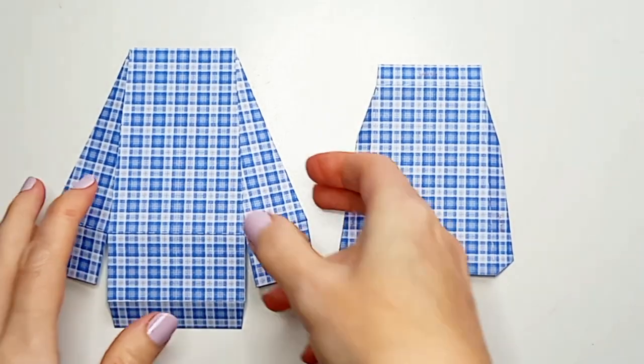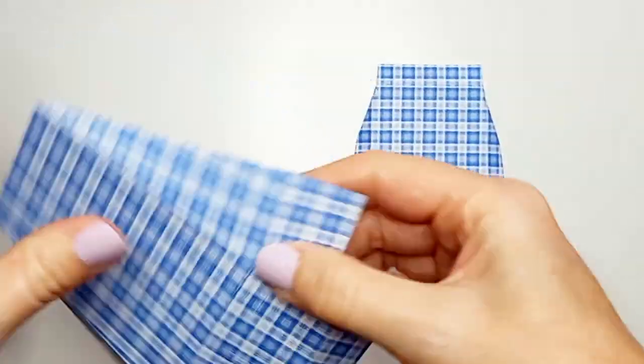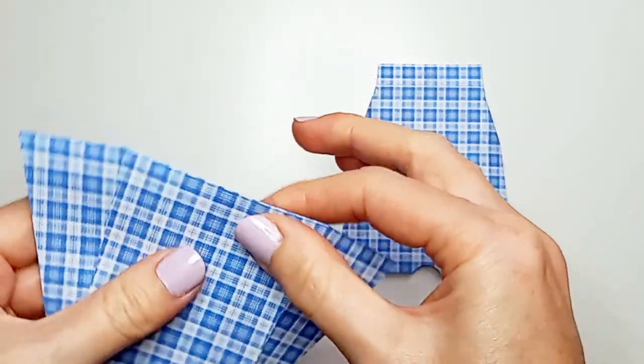Okay, so once you've printed the PDFs and cut everything out, you need to score and fold all of these score lines on these two pieces.